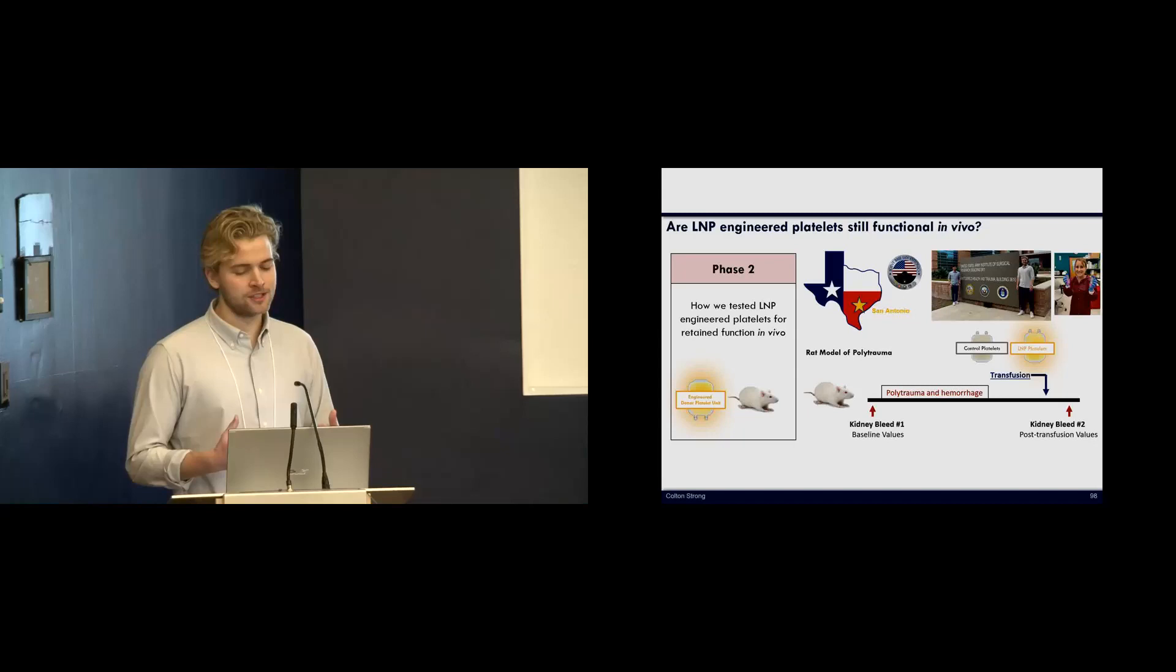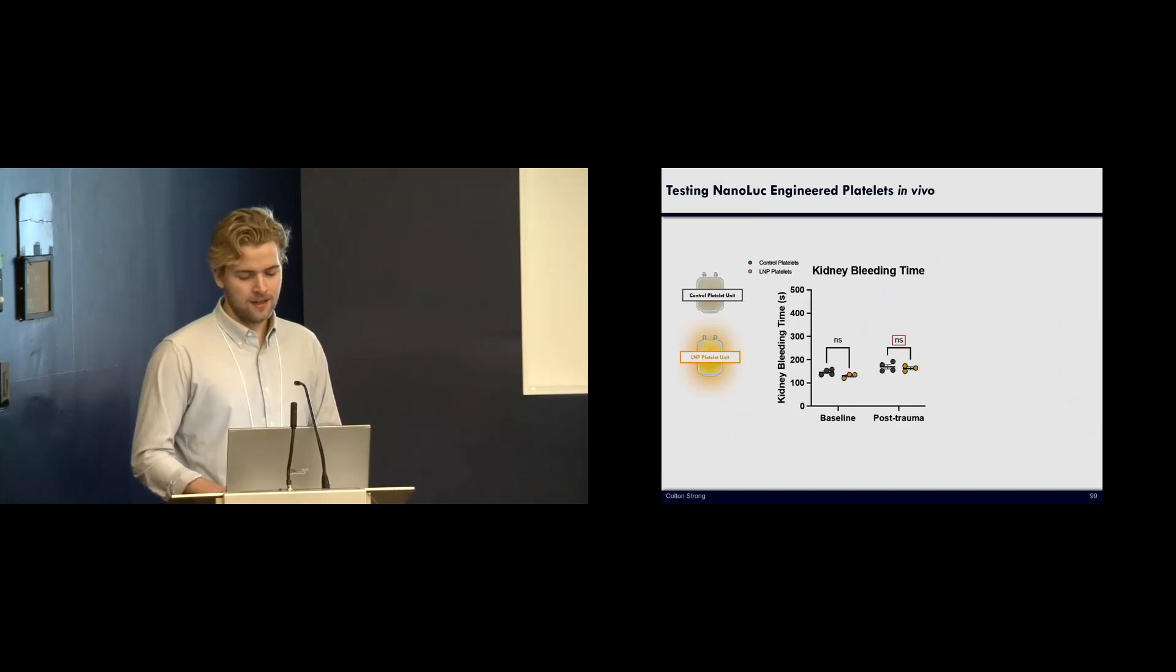And so all you need to know from this model is that it's well-established and it involves taking a kidney bleed time at the beginning to ensure that the animal's bleeding parameters are very similar and then allow the animals to bleed, at which point either our control platelet units or our LNP-engineered platelet units are transfused into the rodents. We then take a final kidney bleeding time, and this is our indicator of platelet efficacy.